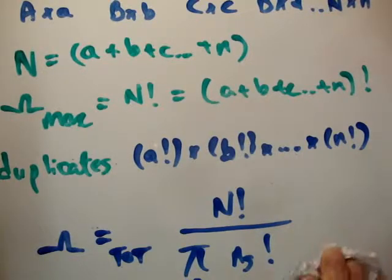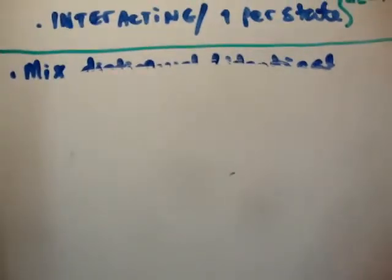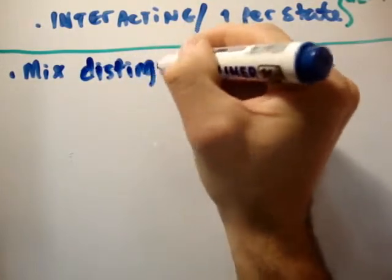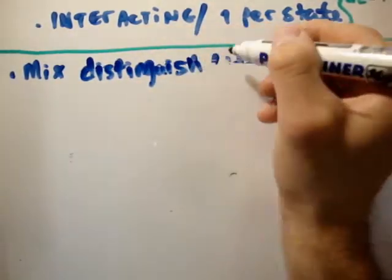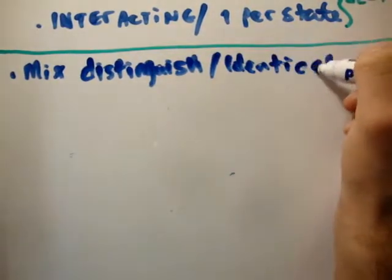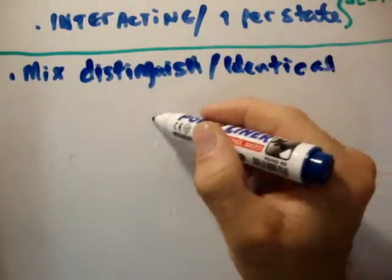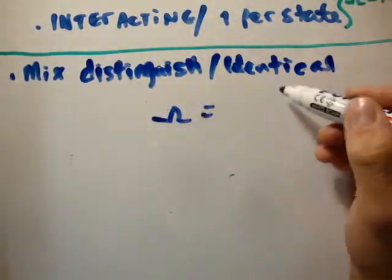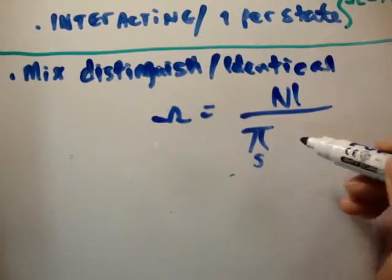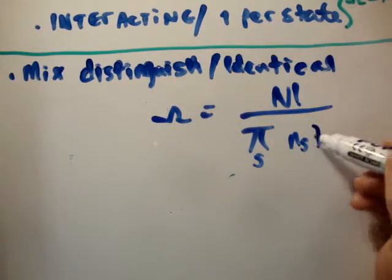Alright, which we have seen already. So I'm going to go back up to here. We have a mix of the things I rubbed out. So here, omega is equal to N factorial over pi over S N sub S factorial.